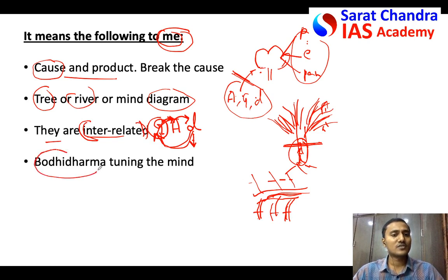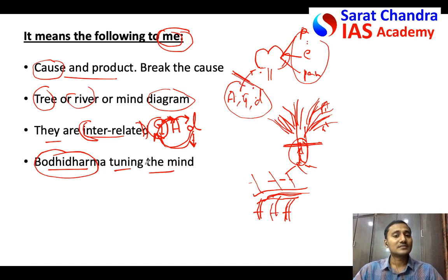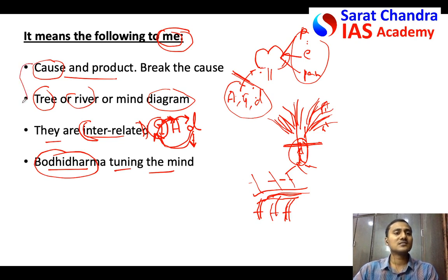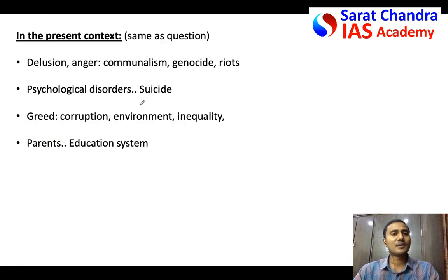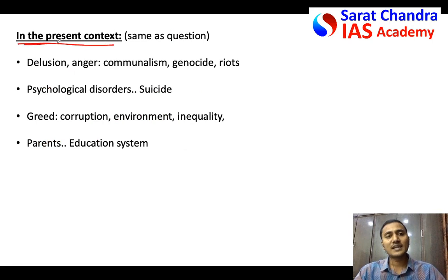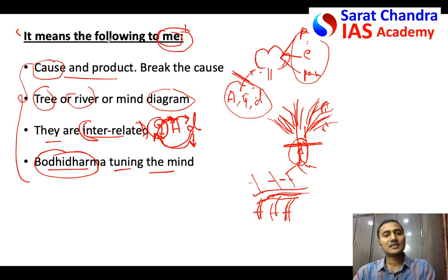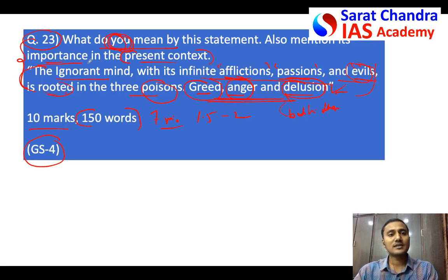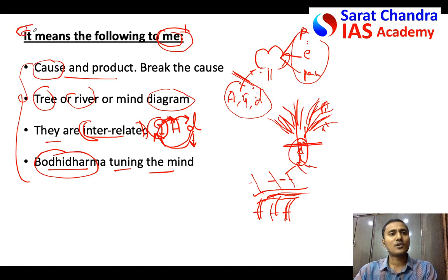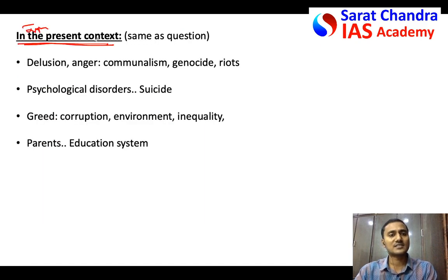If you know the name of the person, you can say Bodhidharma — and not only Bodhidharma, several Bodhisattvas try to tune their mind by cutting off anger, greed, and desire. That's why these Bodhisattvas are successful in leading a peaceful and balanced life. That covers the first part of the question — what you mean by it. For the second part — importance in the present context — I would always suggest keeping side headings with the same words used in the question, so the evaluator can find and assess it easily.